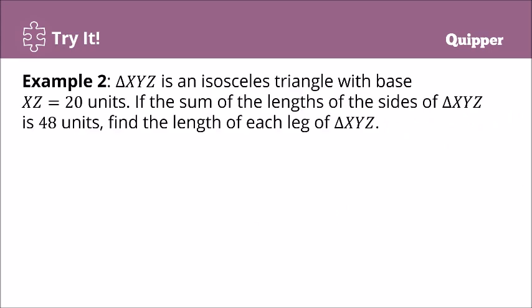Example number two: Triangle XYZ is an isosceles triangle with base XZ equal to 20 units. And if the sum of the lengths of the sides of triangle XYZ is 48 units, find the length of each leg. Take note that an isosceles triangle has two legs and one base, and the two legs have equal measurements.